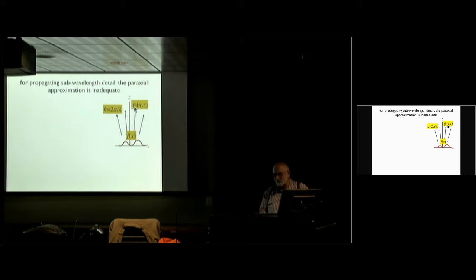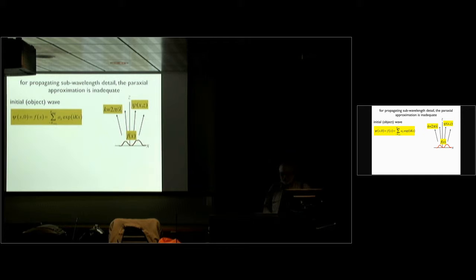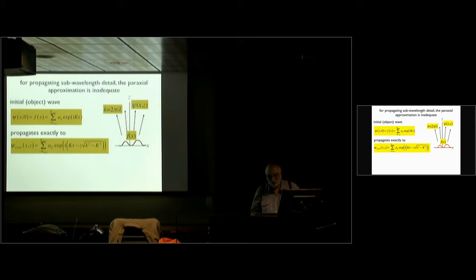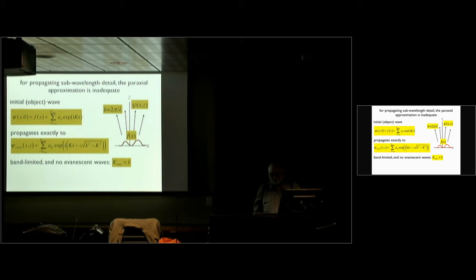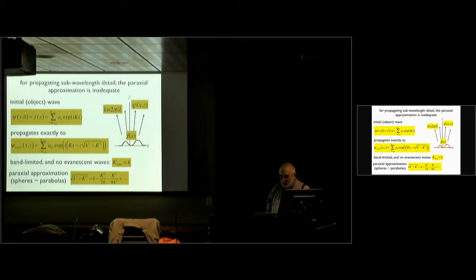The sideways k is k times sin(θ) where θ corresponds to each of the plane waves. It propagates exactly according to the Helmholtz equation — kx then there's minus z times square root of k² minus K². That's exact. This is band limited and there are no evanescent waves because K_max is less than the little k — so this is always a real phase, not an evanescent contribution.